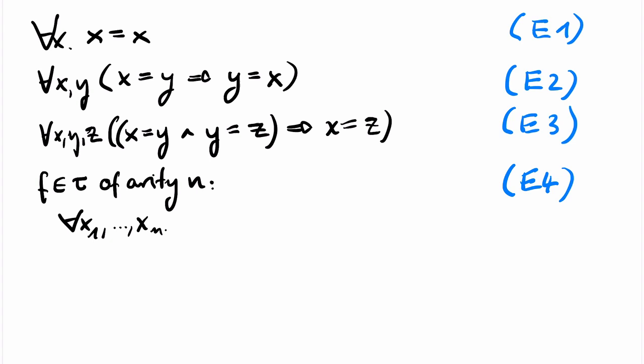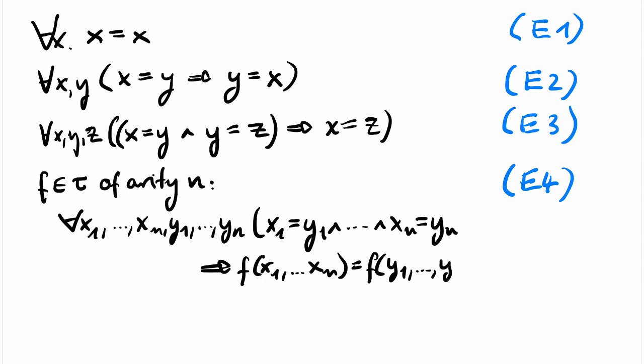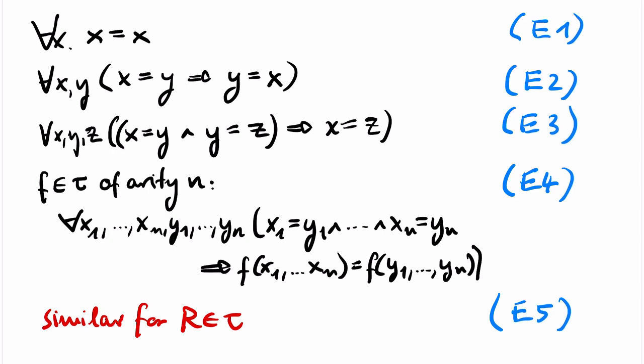Then I need, for every function symbol f of arity k in the signature, the axiom: ∀x₁…xₙ ∀y₁…yₙ, if xᵢ = yᵢ for all i, then f(x₁,…,xₙ) = f(y₁,…,yₙ). This is called E4, and it states that equal things behave equally under function application. We have a similar axiom, E5, for equality with respect to relation symbols instead of function symbols. So the set of axioms, and therefore also our proof system, depends on the signature.